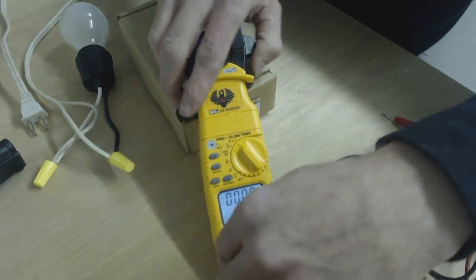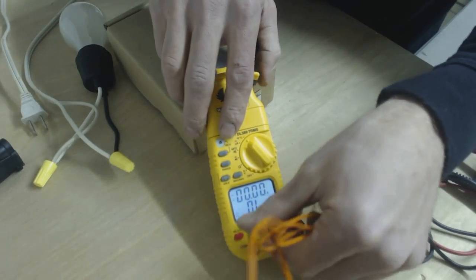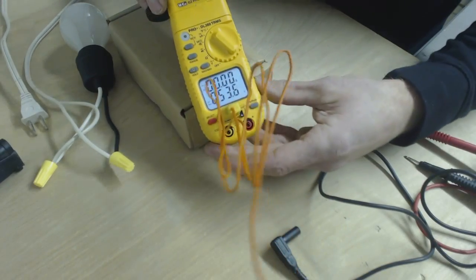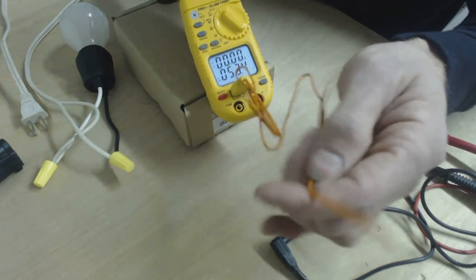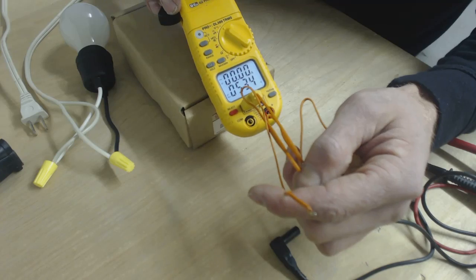We're going to go to Fahrenheit and Celsius. We have a temp sensor which we can put in. And our reading here on our thermocouple end is 53 degrees Fahrenheit.